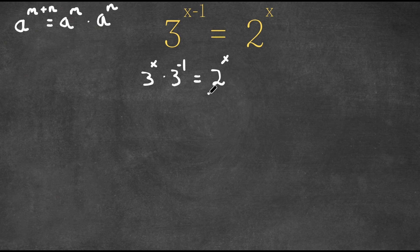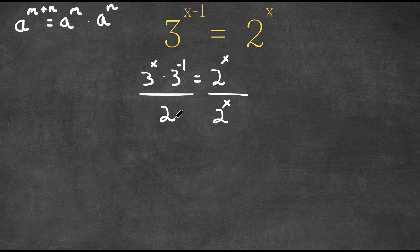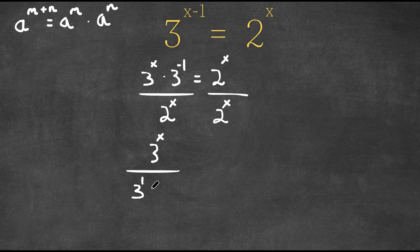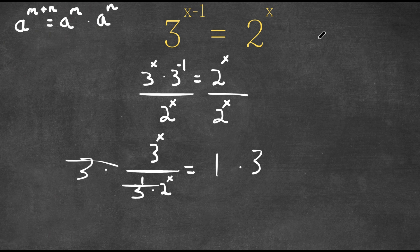Now I'm actually going to divide by 2 to the power of x on both sides. I'm going to move the 3 to the power of negative 1 to the denominator, and now it's going to be 3 to the power of positive 1. This is equal to 1, so I'm going to multiply both sides by 3. These two cancel out and you're left with 3 to the power of x over 2 to the power of x is equal to 3.